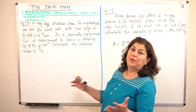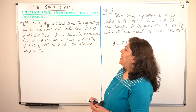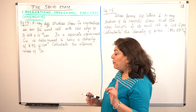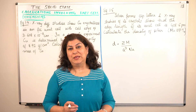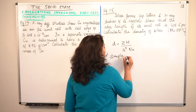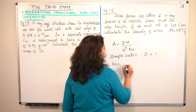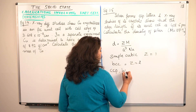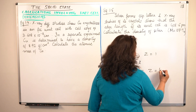X-ray diffraction — this is example 1.4 of your textbook, the solved example. X-ray diffraction studies show that copper crystallizes in an FCC unit cell. The number of atoms in a simple cubic unit cell: Z is 1. For body centered cubic, Z is 2. For cubic close packing, HCP, face centered cubic (FCC), any of these, the value of Z is equal to 4.